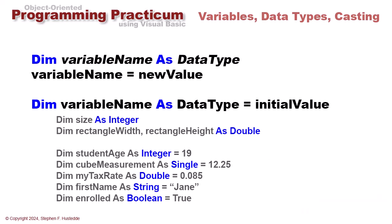Student age is an integer containing 19. Cube measurement is a single data type containing 12.25. Singles as well as doubles can contain decimal values. An integer is a whole number with no decimals. My tax rate is a double equals 0.085. First name is a string variable containing the literal string "Jane". Enrolled is a boolean variable—it can be either true or false, and here we're setting it to true.